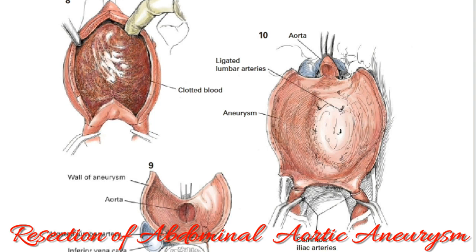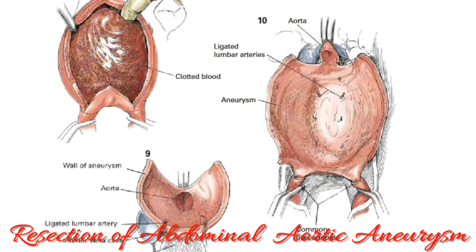Angled vascular clamps are applied to the distal common iliac arteries. An aortic clamp is used to occlude the aorta proximal to the aneurysm and distal to the renal arteries; careful identification of the position of the renal arteries is mandatory before clamp application. The aneurysm is then opened through a linear arteriotomy, and the mural thrombus is extracted. Bleeding from the paired lumbar arteries is controlled with full-thickness mattress or figure-of-8 non-absorbable suture ligatures. The aortic cuff is next prepared by dividing all but the posterior wall, leaving this portion attached to prevent troublesome bleeding from lumbar veins often found in this area. The iliac arteries are prepared in similar fashion, with the posterior wall left undisturbed to protect the iliac veins.